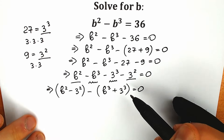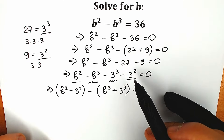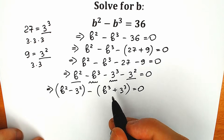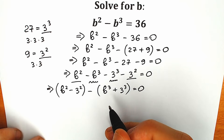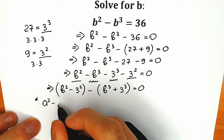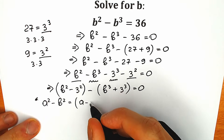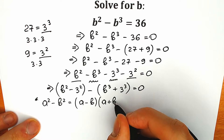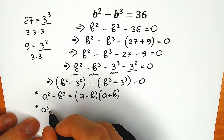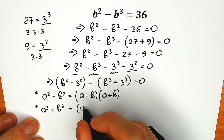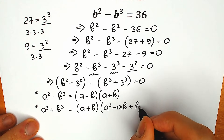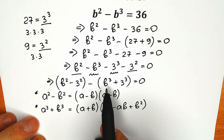I really hope you understand the solution until this moment. The first group is the difference of squares: b squared minus 3 squared. The second group is the sum of two cubes: b cubed plus 3 cubed. Let's remember these formulas. Difference of squares: a squared minus b squared equals (a minus b)(a plus b). Sum of two cubes: a cubed plus b cubed equals (a plus b)(a squared minus ab plus b squared).